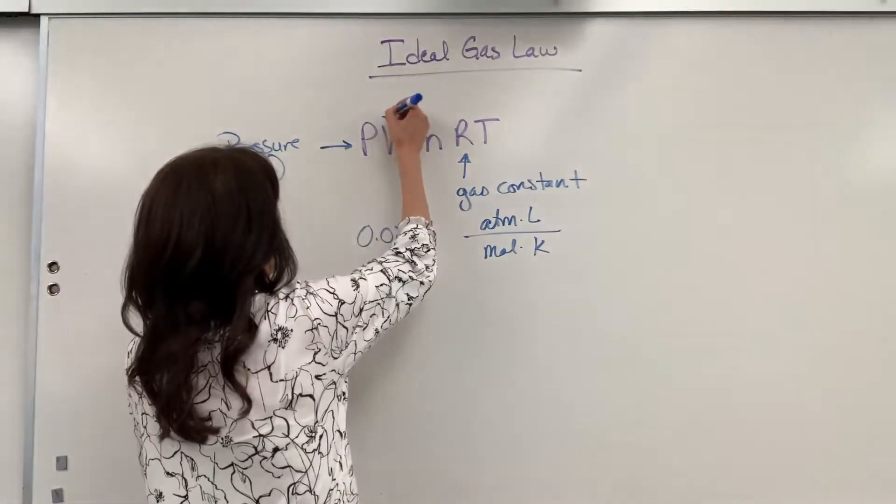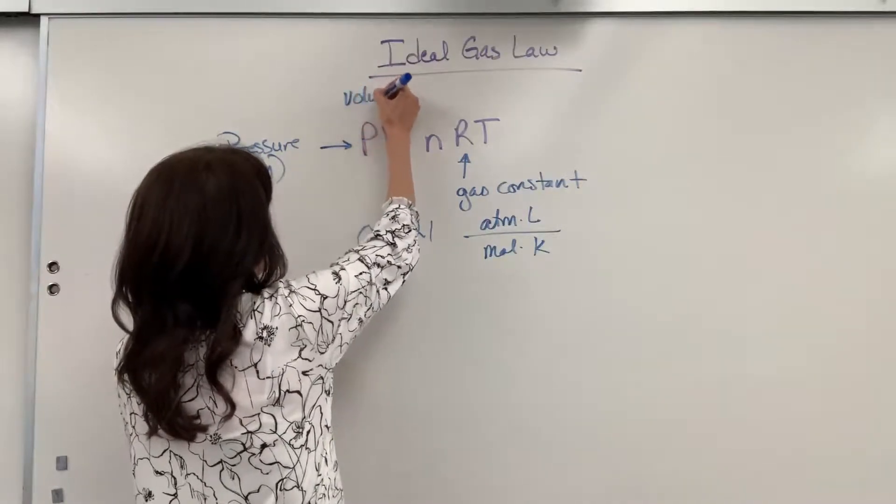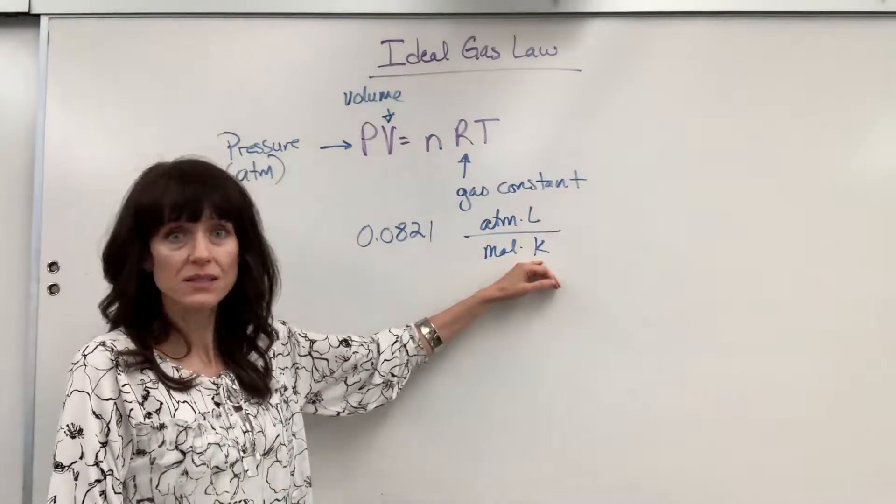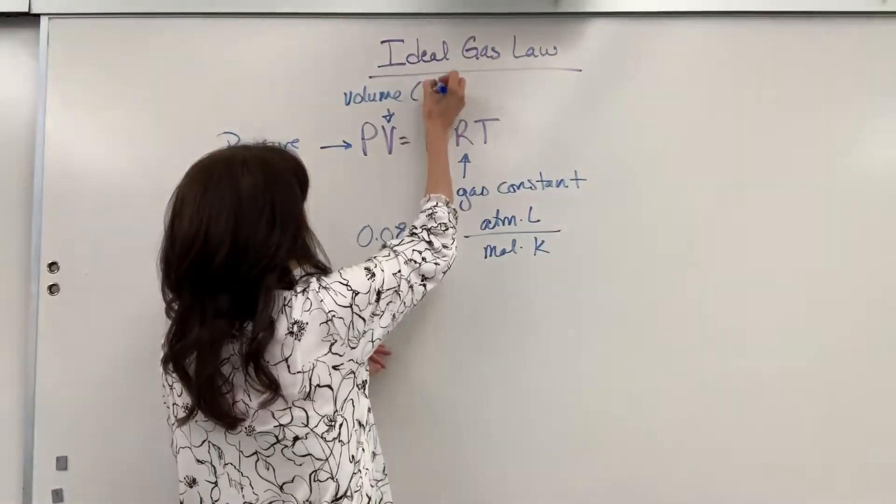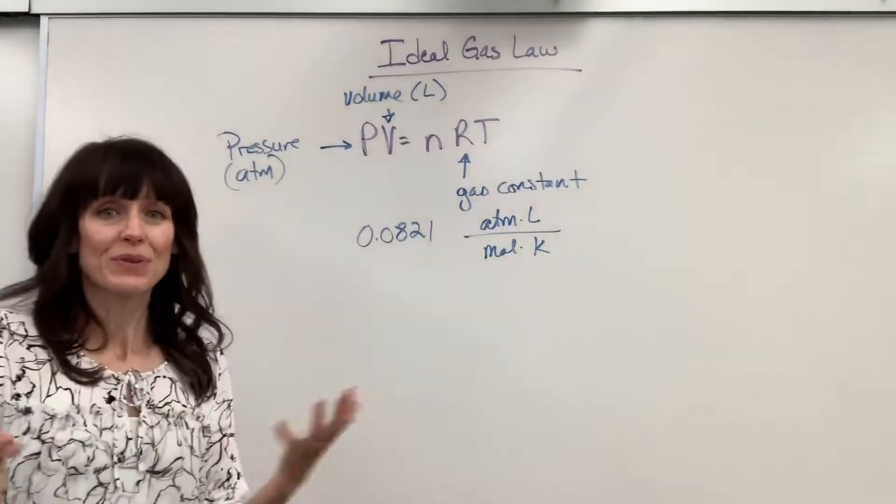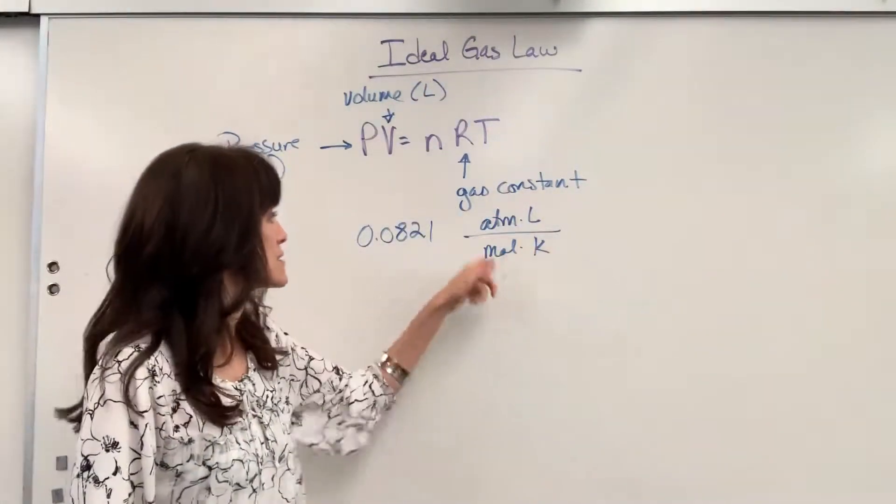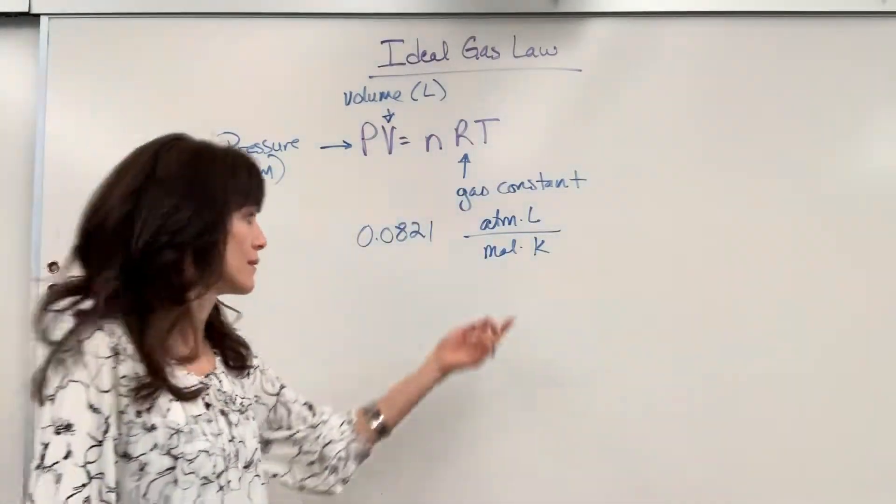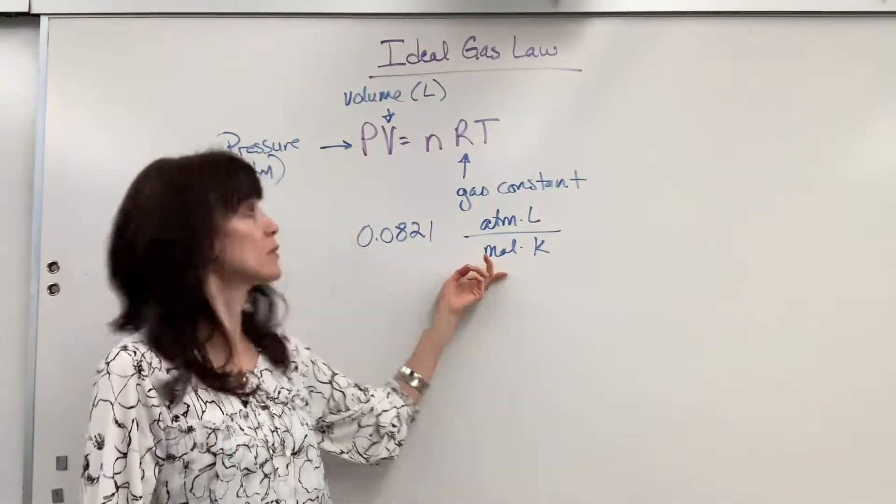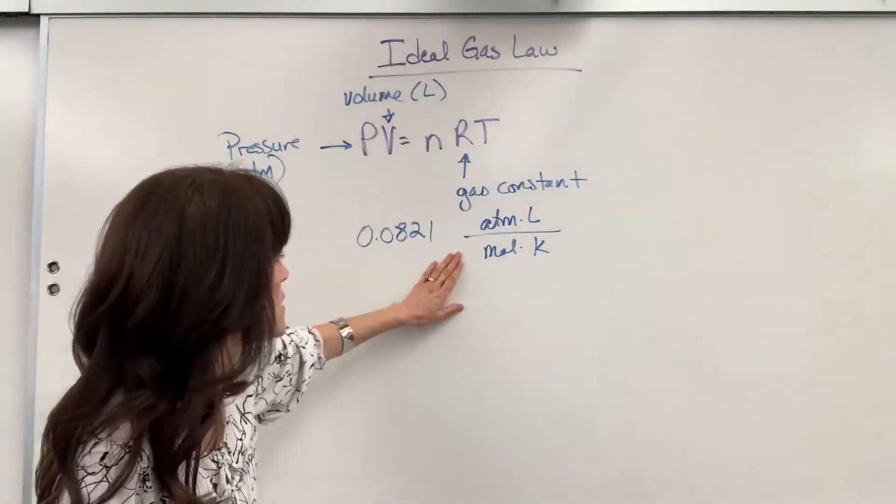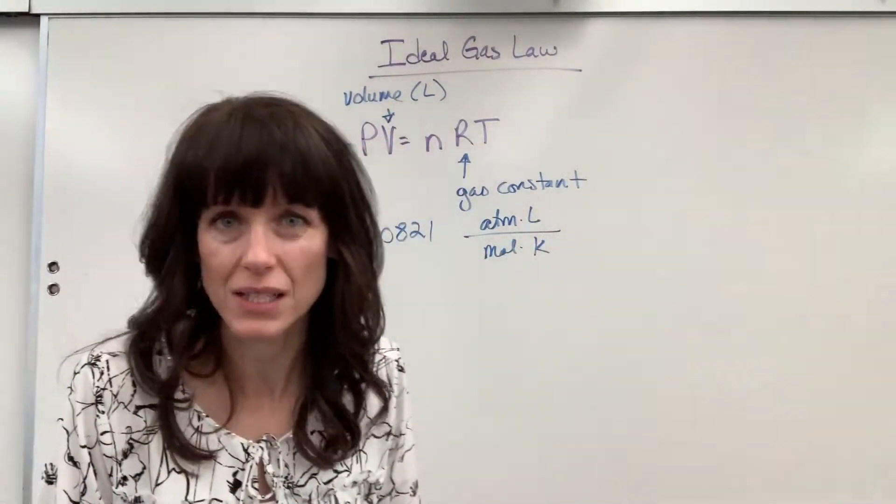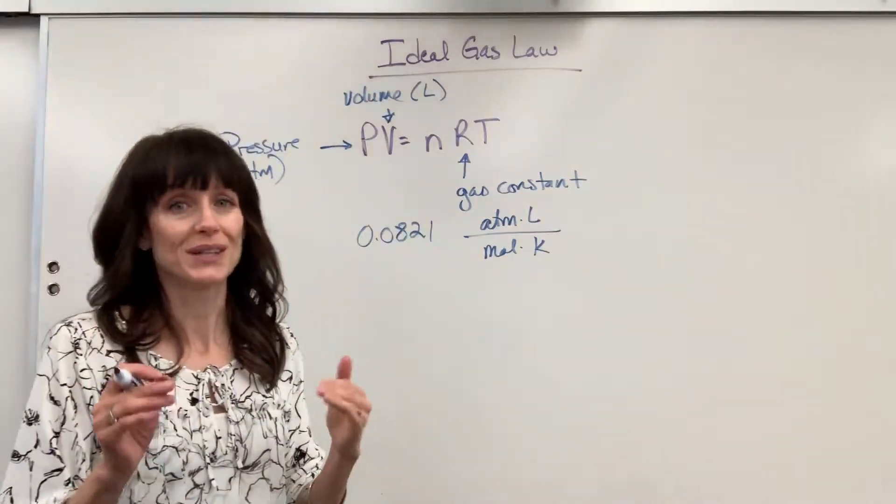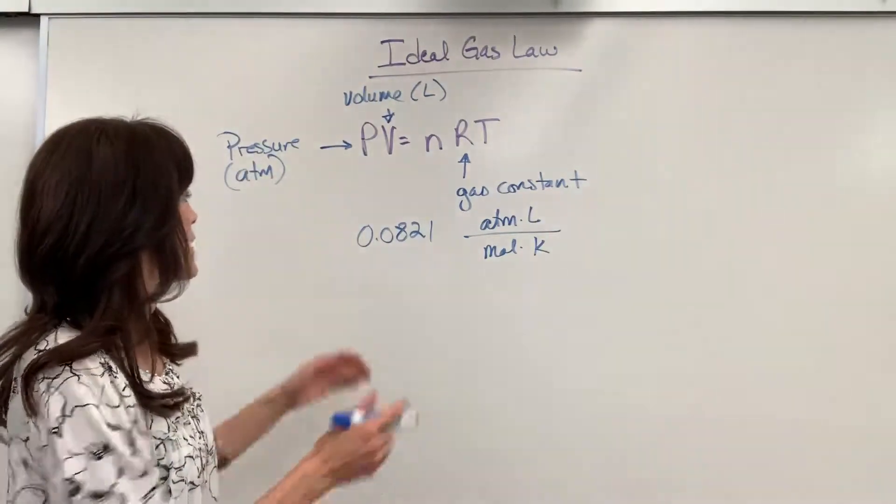V is going to be volume. And look at our gas constant. We can see that volume has to be in liters. Now, you can see right off, this will dictate every other unit. So if you're not sure what unit you need, look at the gas constant. It will tell you. If you're given mils, look at the gas constant. I go, oh, wait, I've got to convert that to liters. So important you have to have the right units.